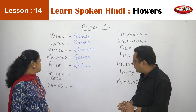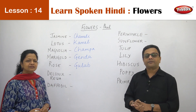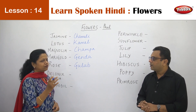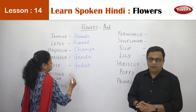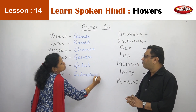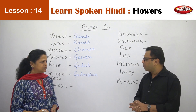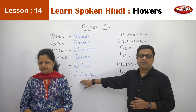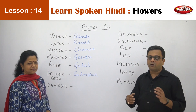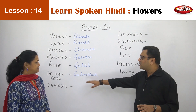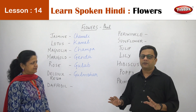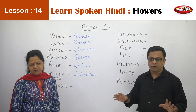Then it is Delonix Regia — this is the Gulmohar flower. Gulmohar is an orange type of flower from which colors are also extracted. The Gulmohar comes in different colors — most common is orange but you can get pink also. These Gulmohar flowers are not used for personal grooming, and not offered to God either. These are just decorative trees and the flowers are kept on the tree as they are. In India we don't really use them.